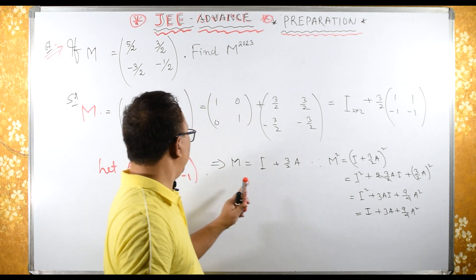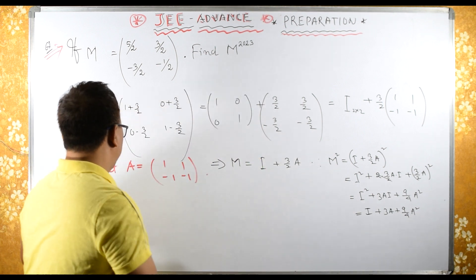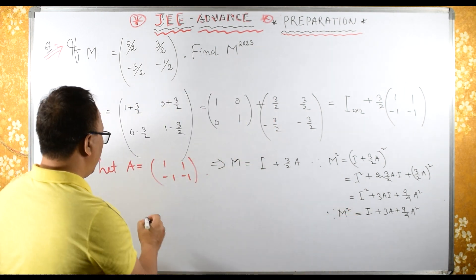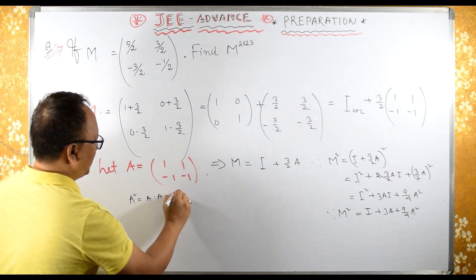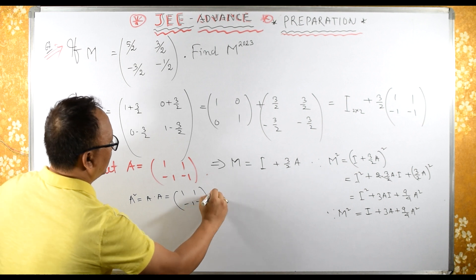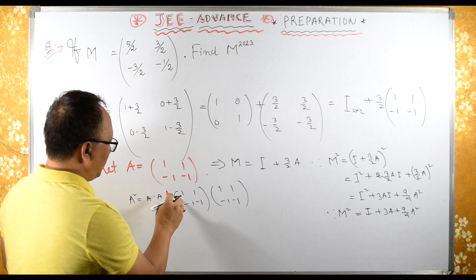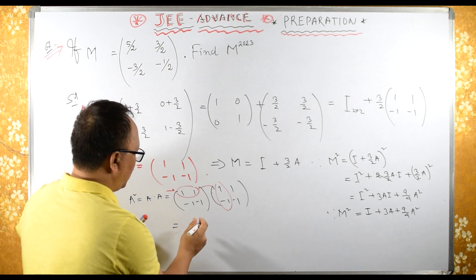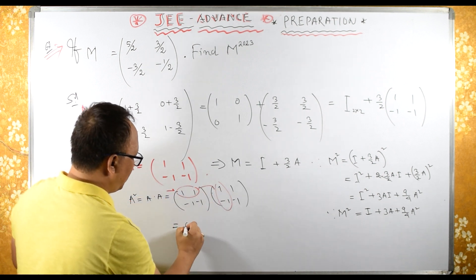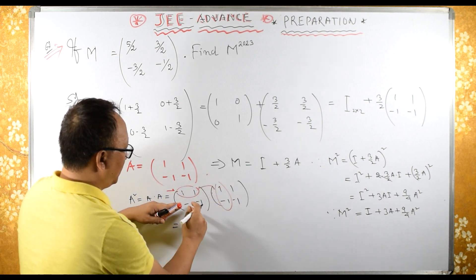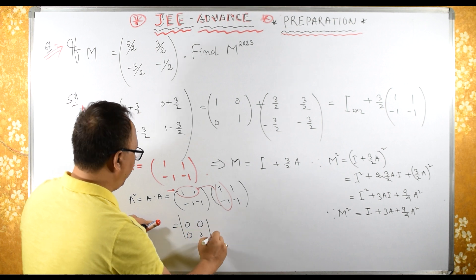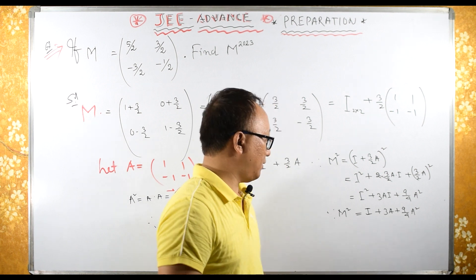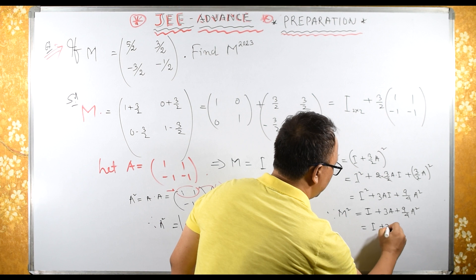Now what is A squared? A squared equals A times A: [[1,1],[-1,-1]] times [[1,1],[-1,-1]]. Each entry becomes 0, so A squared equals the zero matrix. Therefore this last part becomes 0, and M squared equals I plus 3A. Since A squared equals 0, therefore A cubed, A to the 4, A to the 5 — everything, A raised to N — will all become 0.